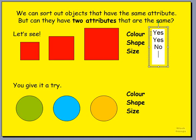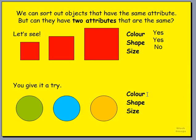So we can say that in this example, there are two attributes that are the same. The color is the same and the shape is the same, so we can put these three in a group because they have two attributes that are the same. Now you give it a try.